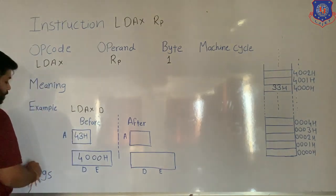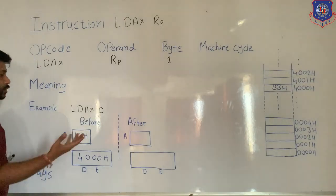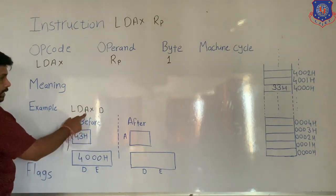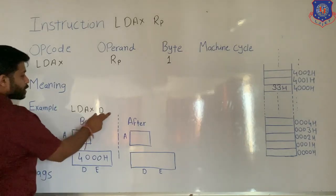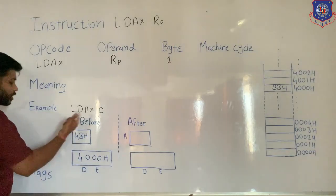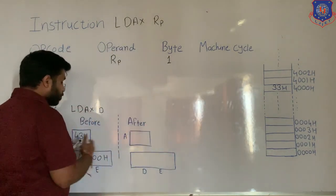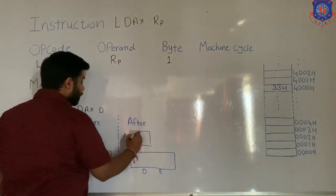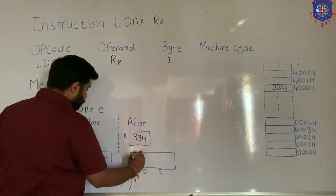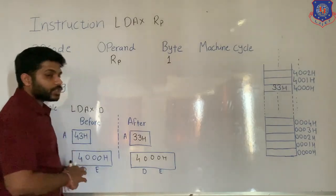Now we are taking the example of LDAX D. Before execution, the accumulator contains 43H and the DE pair contains 4000H. After executing this instruction, the accumulator will receive data from the memory location specified in DE pair, which is 4000H. So the data from memory location 4000H will be transferred to the accumulator, overwriting it with the new value 33H. After execution, the DE pair remains the same.